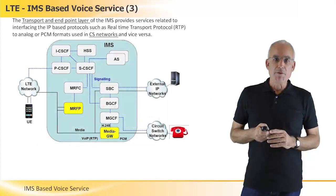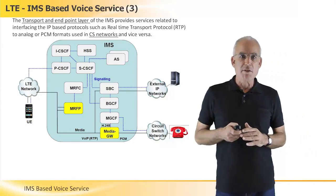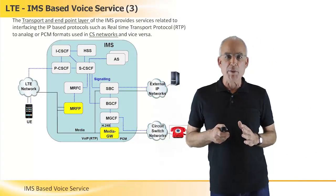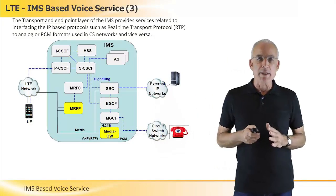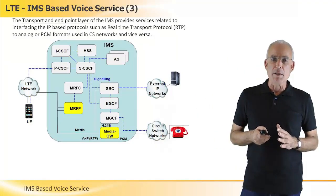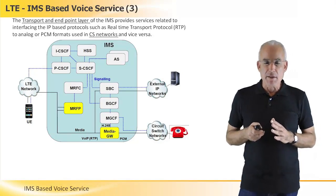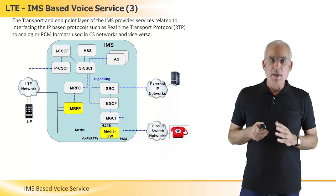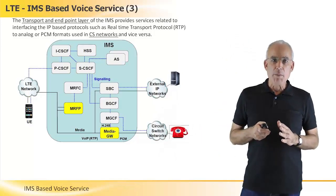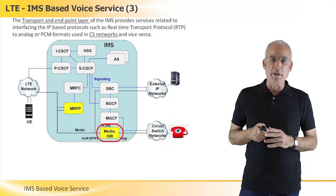One of the functions required for supporting a voice call is translation between voice over IP protocol — more specifically between real-time transport protocol (RTP) — to analog or PCM-based formats in the circuit switch network, and vice versa. This is accomplished by the media gateway, which is part of the IMS endpoint layer.